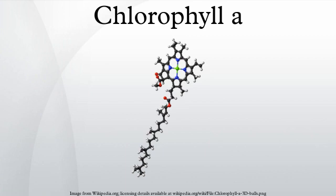Chlorophyll A has a long hydrophobic tail, which anchors the molecule to other hydrophobic proteins in the thylakoid membrane of the chloroplast. Once detached from the porphyrin ring, this long hydrocarbon tail becomes the precursor of two biomarkers, pristane and phytane, both of which are important in the study of geochemistry and the determination of petroleum sources.